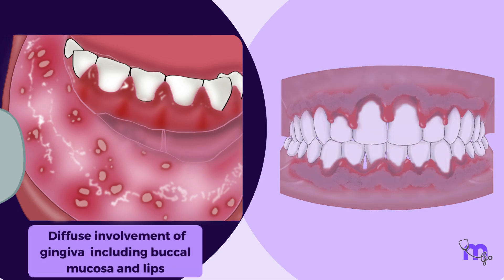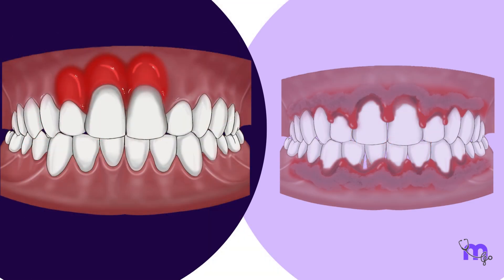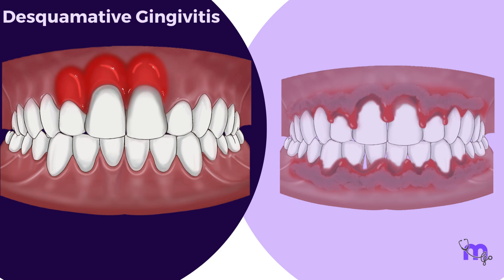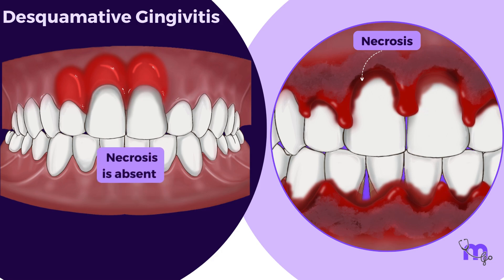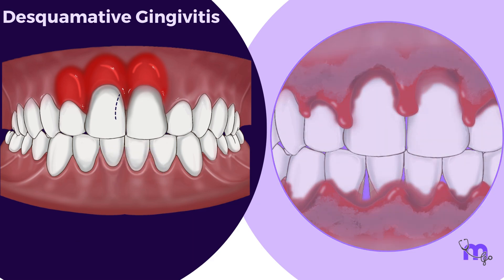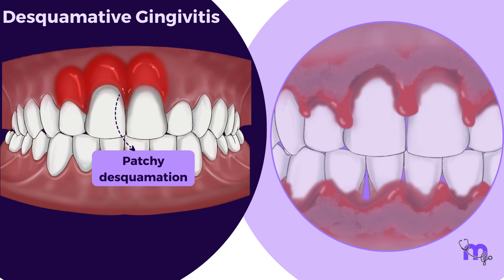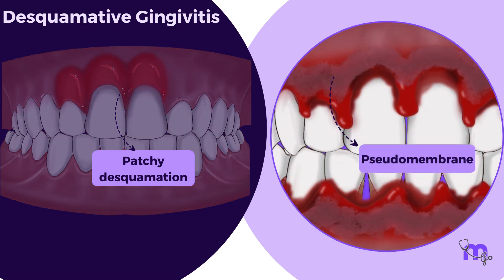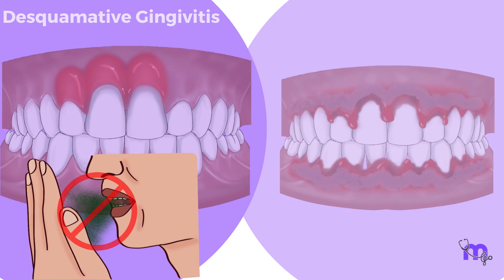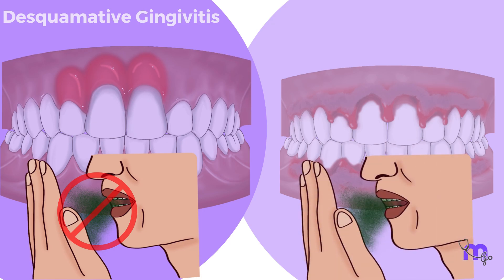The diffuse involvement of gingiva, which may include buccal mucosa and lips, is unusual for ANUG. Desquamative gingivitis also shows diffuse involvement. Necrosis is absent in the papillae. It may or may not be painful. There is patchy desquamation of the epithelium instead of the pseudomembrane, and no fetid odour is noted as seen in ANUG.